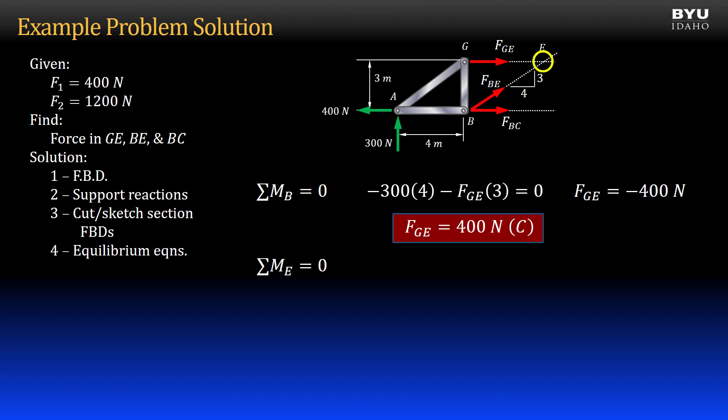If I sum moments to zero about point E, I will have force BC as the only unknown in my equation. The equation has the 300 newton reaction force times its moment arm, which is 8 meters from point E, acting in the negative direction. The 400 newton reaction force times its moment arm, 3 meters, also negative,